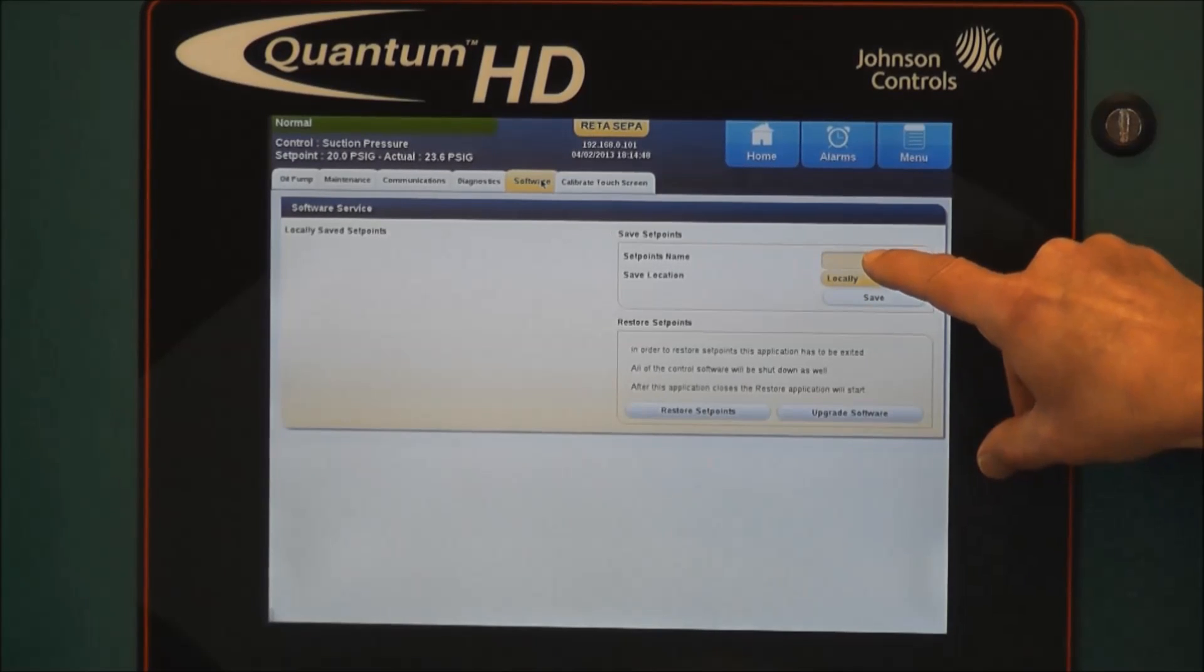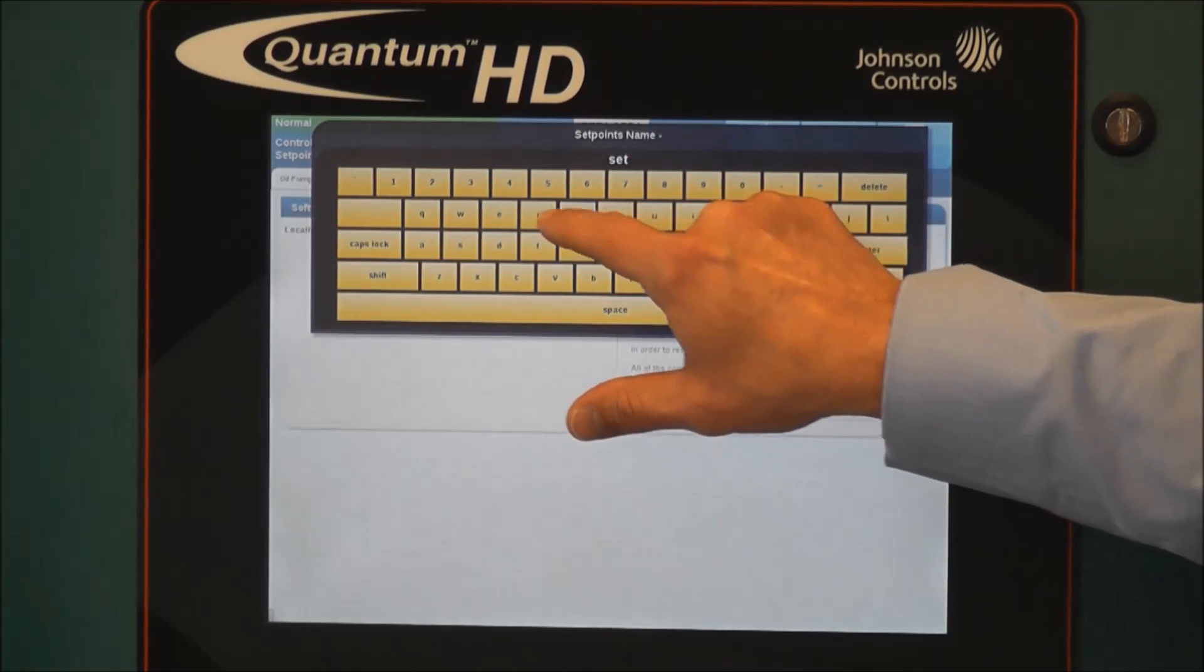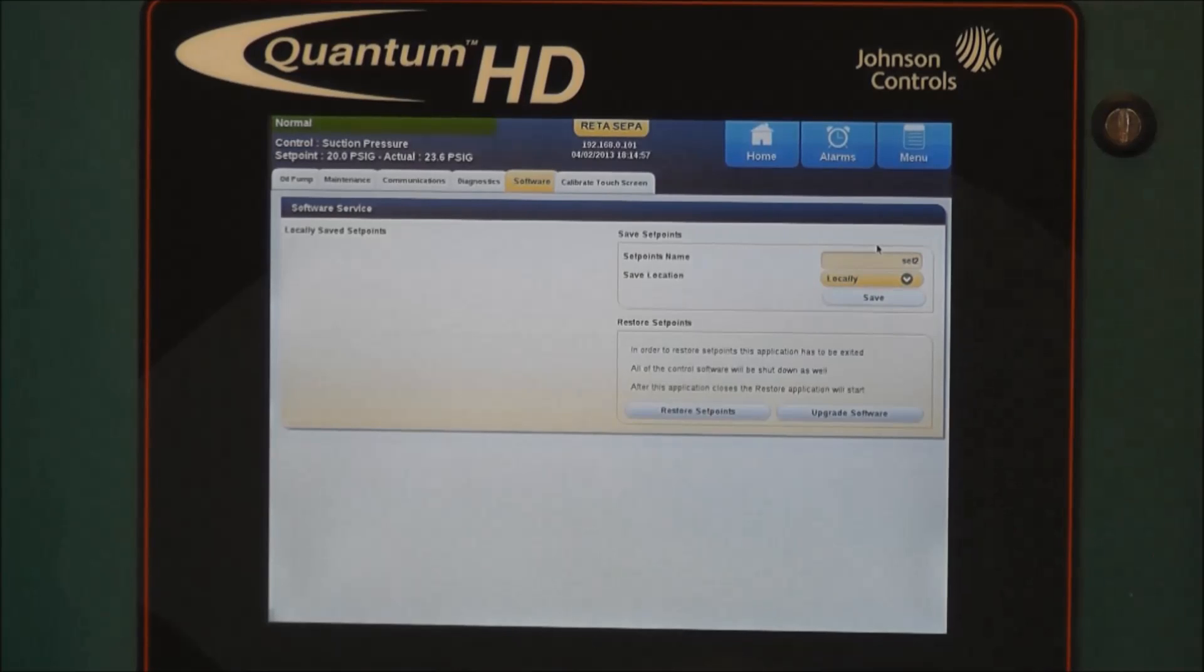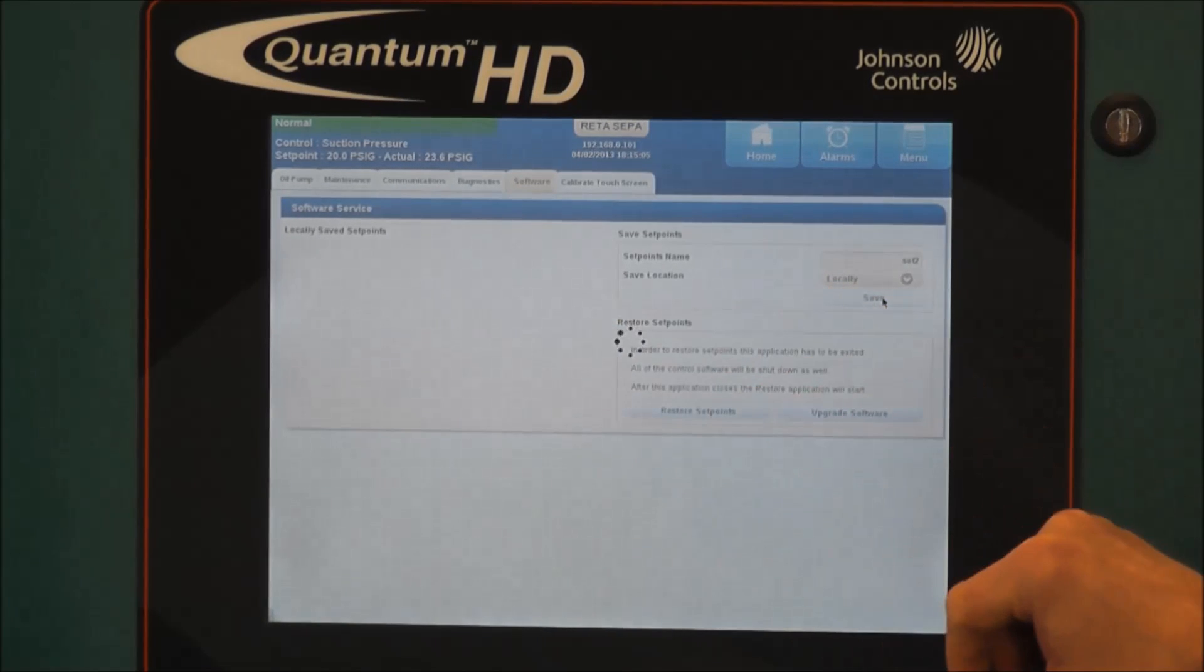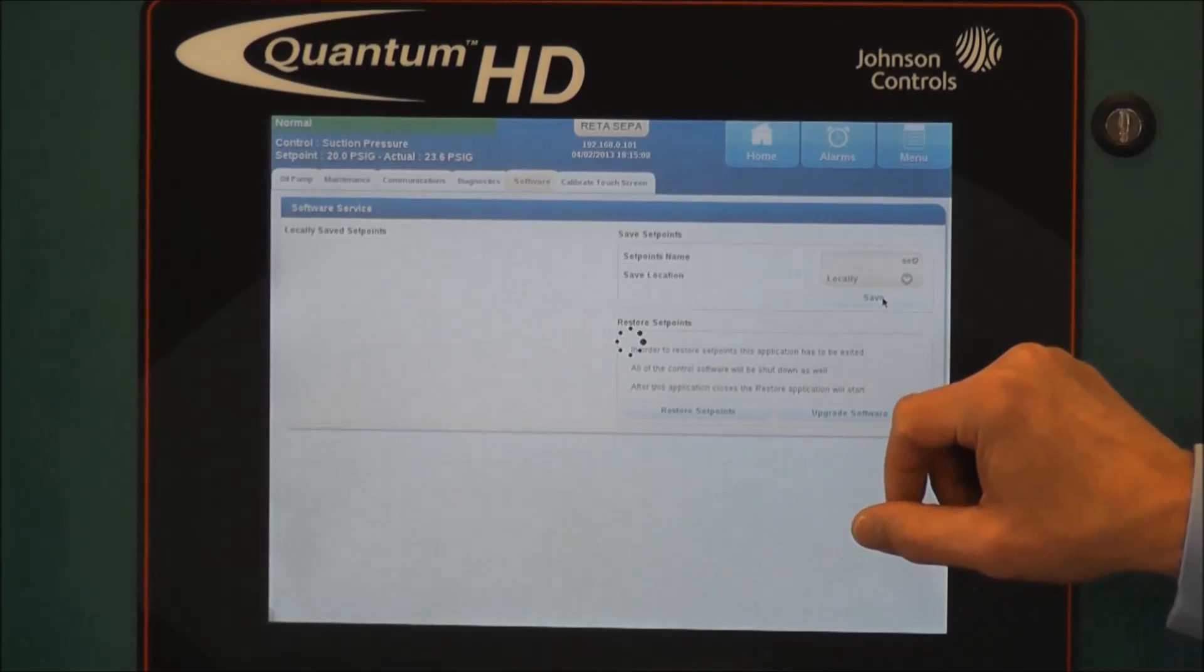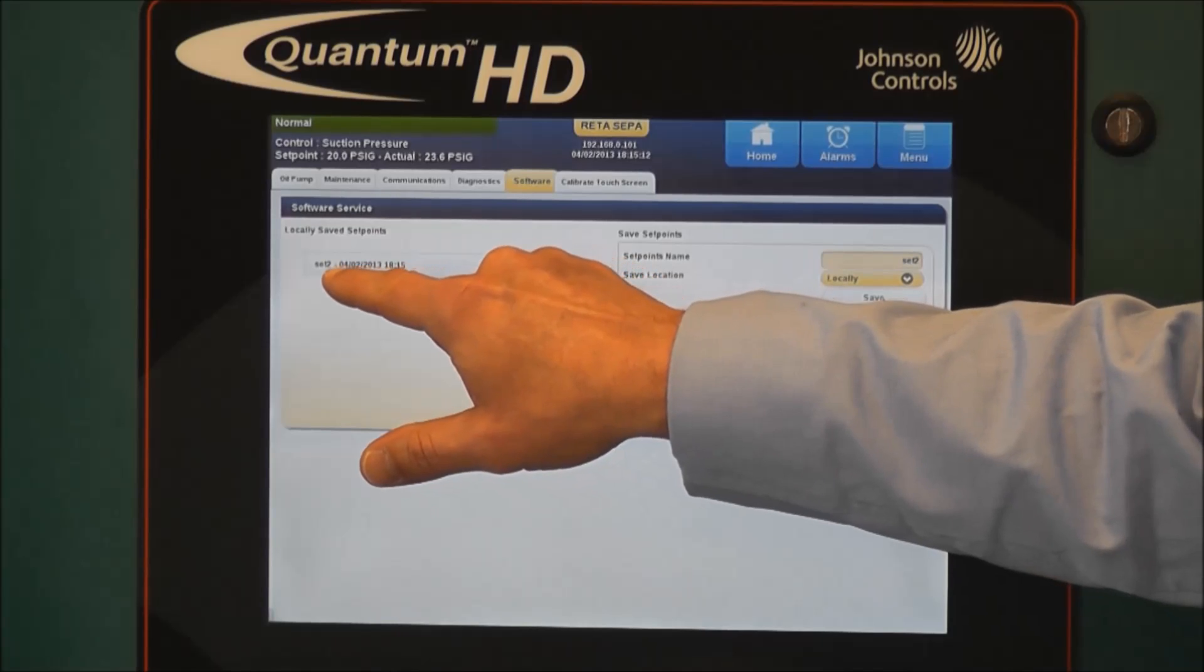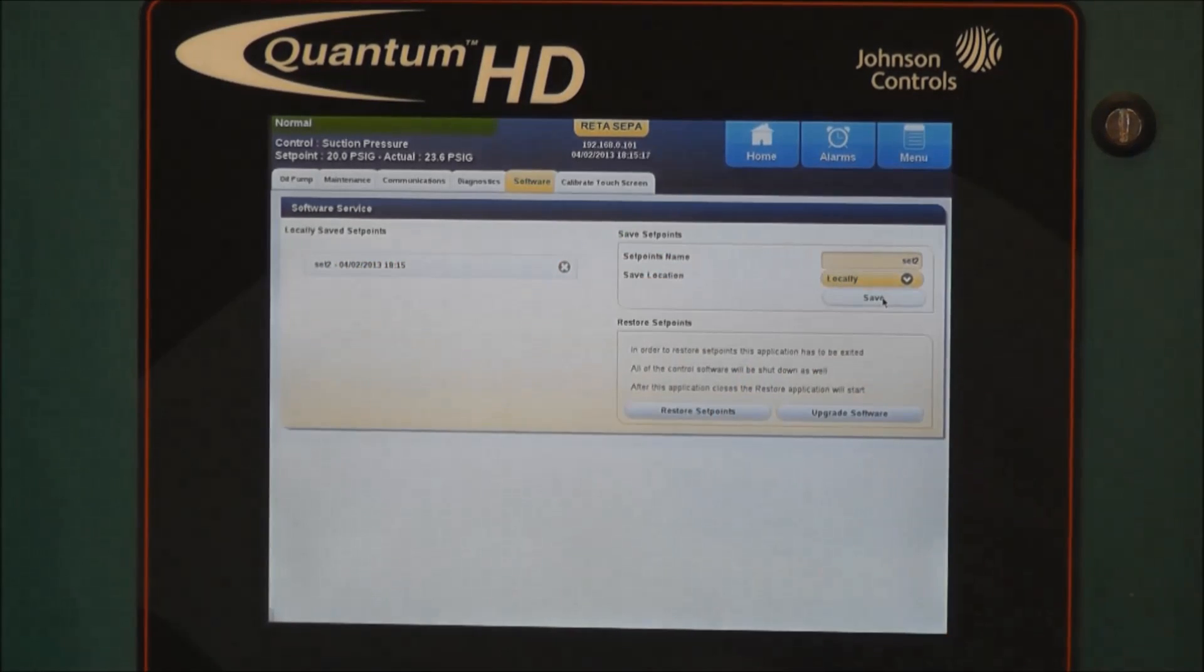And again, we will enter in a name for the setpoints file. And for the purpose here, we will enter in 'set two' and press enter. We are set to save locally. That is the default. So we simply hit save and you'll see the circling icon and then the screen will change back to normal. And you'll see that we have our set of setpoints, which is 'set two' with the date and the time that that set of setpoints was saved. And that concludes the process for saving a set of setpoints locally.